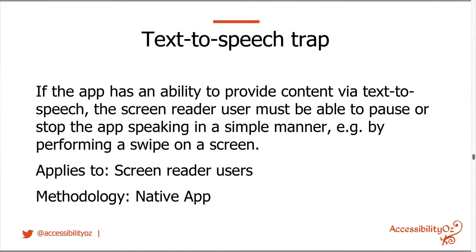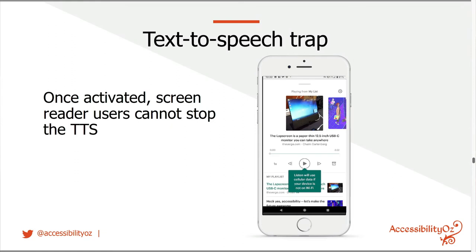The text-to-speech trap: if the app provides content via text-to-speech, the screen reader user must be able to pause or stop the app speaking in a simple manner — for example, by performing a swipe on screen. If there's text-to-speech, users need to be able to navigate through the page or stop it. As an example, in the Pocket app you can press play and it reads an article out to you, but there's no easy way for the screen reader to stop that playing — they just have to wait until the end of the article.